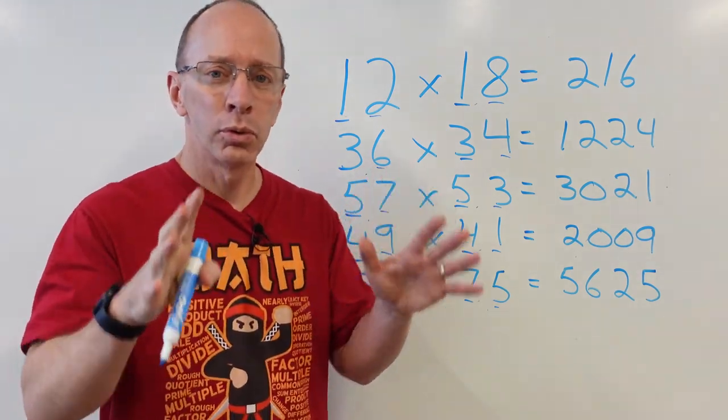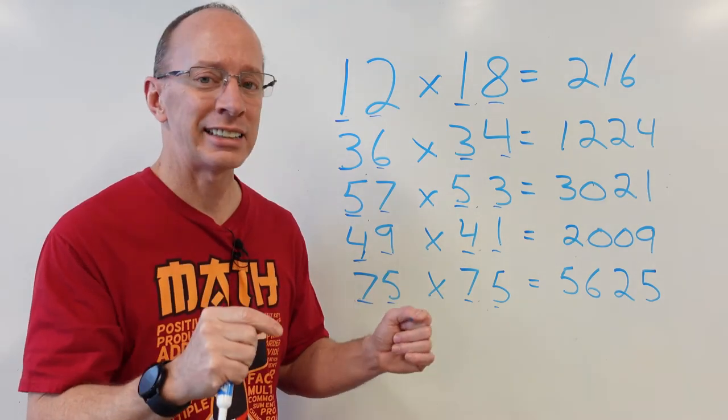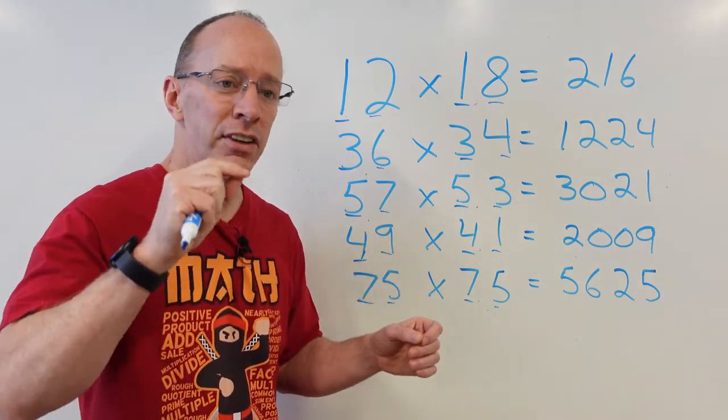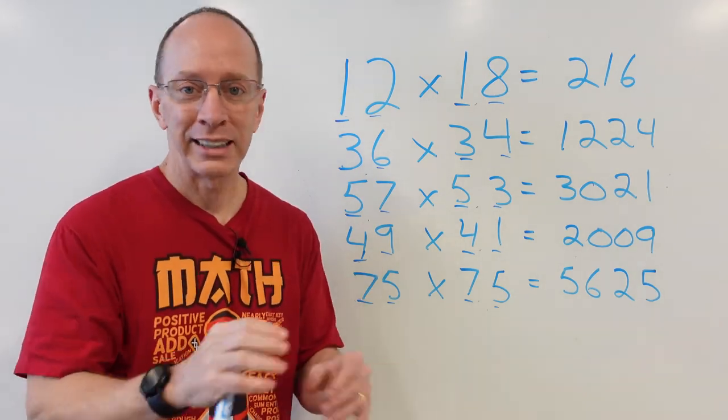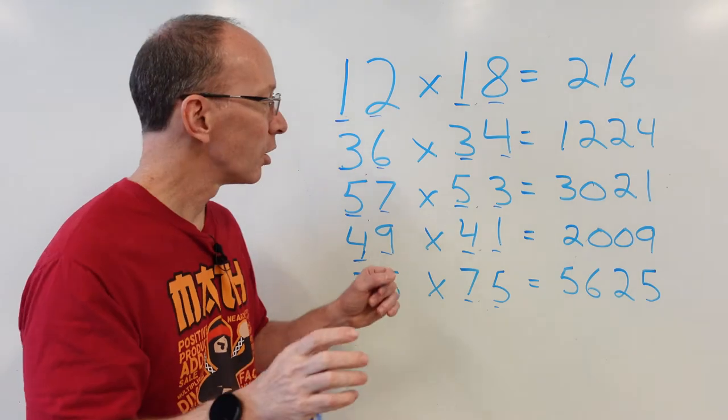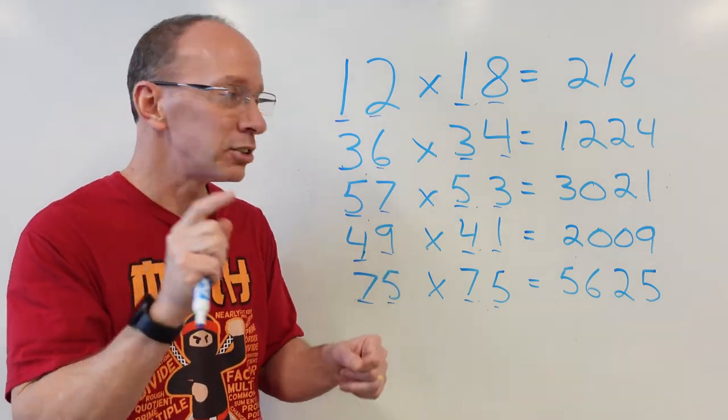So, there are rules to this. You just cannot take a number like 54 times 39. No, that's not going to work with this. So, there is a little trick to that.